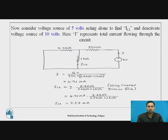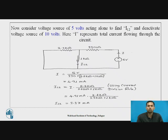Now we find current IL2 through the 1 kΩ resistor using the current division rule. The formula is IL2 = I × 2.2 kΩ / (2.2 kΩ + 1 kΩ). So current IL2 when analyzing the effect of the 5V voltage source becomes 3.37 mA.